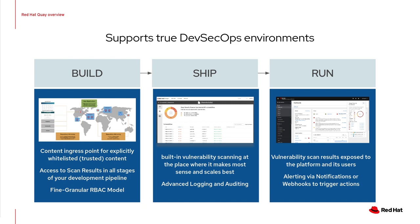The more you shift left your security approach, the more important it is to enable developers to have access to the information needed to take care of security aspects already in very early stages of the software development lifecycle. With its very efficient and fast vulnerability scanning, Quay helps to detect vulnerable images already in early stages of the CI/CD pipeline. Using the integration into the Kubernetes platform and visualization inside the OpenShift console, it helps to detect security issues with images both running and at rest easily.